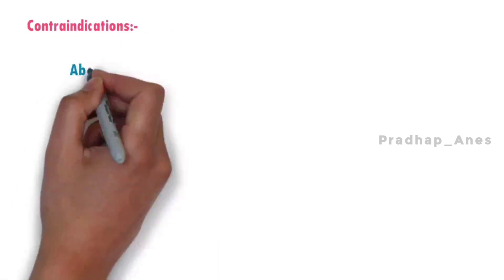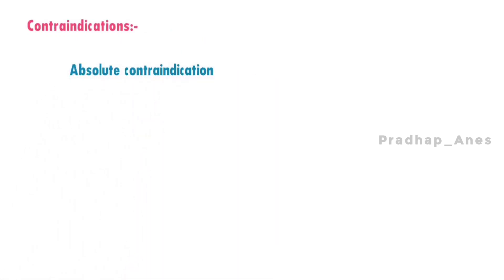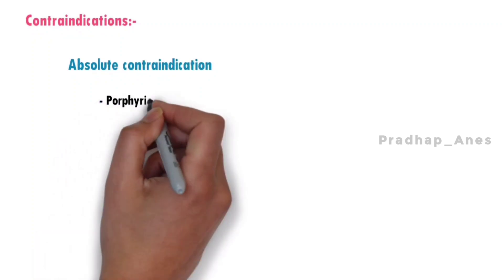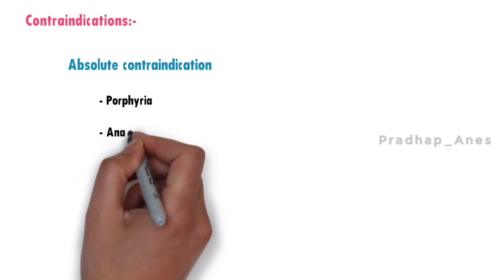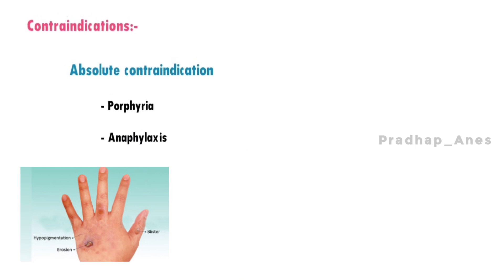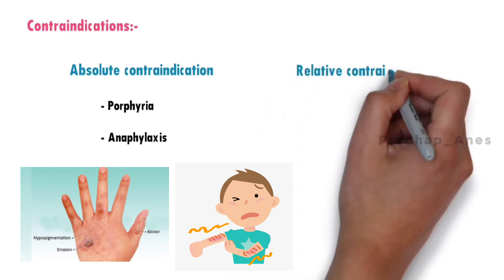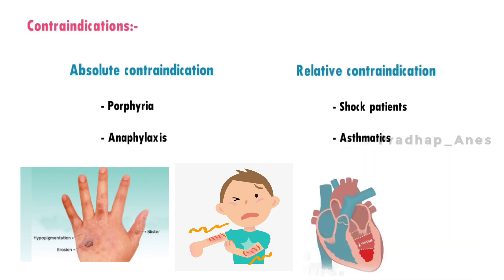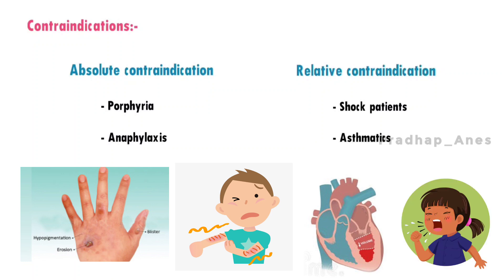Contraindications — Absolute Contraindication: Porphyria. Porphyria is a group of disorders that occur due to the accumulation of porphyrins in the body. Thiopentone increases this accumulation and can cause an acute attack of porphyria in susceptible individuals, which is why it is contraindicated in these patients. Anaphylaxis: It is contraindicated in patients allergic to thiopentone. Relative Contraindications: Shock patients — as it reduces blood pressure, it is contraindicated in shock patients. Asthmatics — due to respiratory depression, it is not advisable for asthmatic patients.